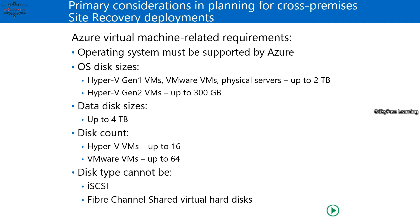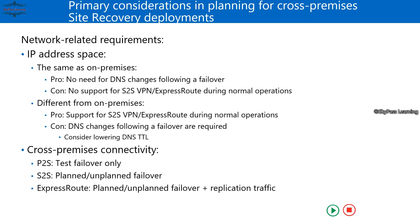For cross-premises or site recovery deployment, you must configure the IP address space. It can be the same as on-premises or different from on-premises — each has pros and cons depending on routing issues. If you have cross-premises connectivity, P2S (point-to-site) is not recommended for such a large-scale deployment.